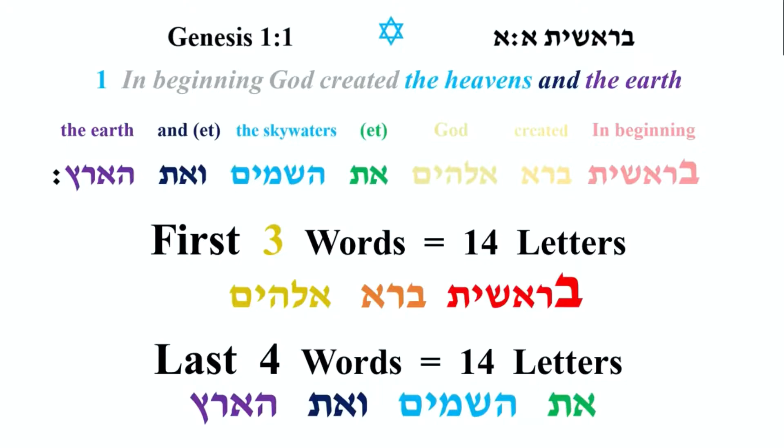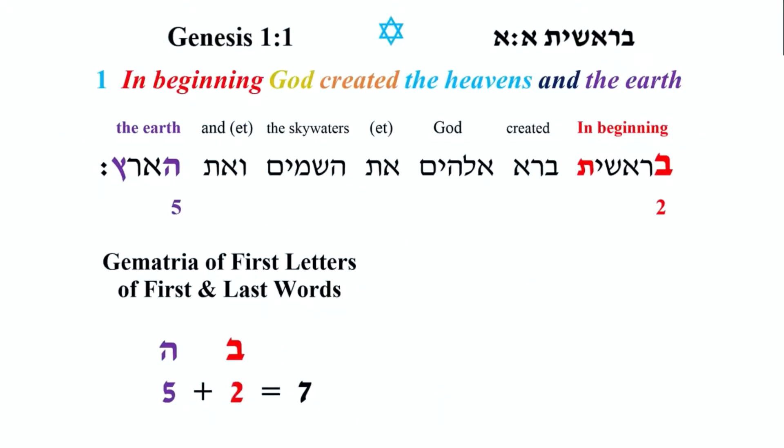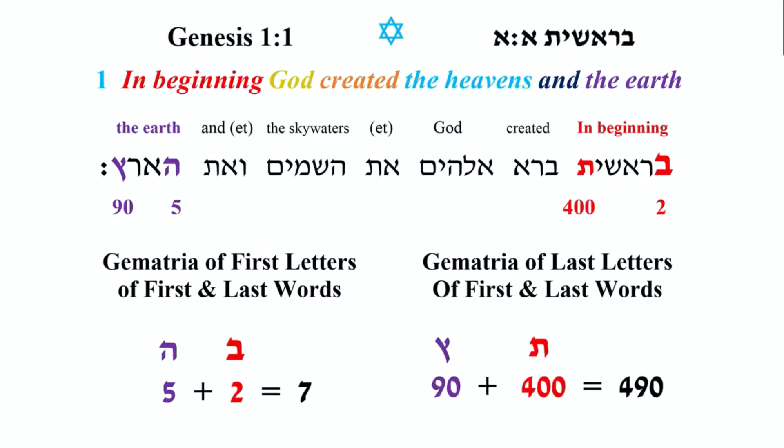If we take the gematria of the first letters of the first and last words of Genesis 1:1 — which is the word Bereshit and the word HaAretz — we're looking at Bet and He. Bet is 2, He is 5, because they're both the first letters in those words, and so we get 7. If we take the last letters of the first and last words, Tav is 400 and Sadi is 90, giving us 490. And 490 is divisible by 7 — 70 times.